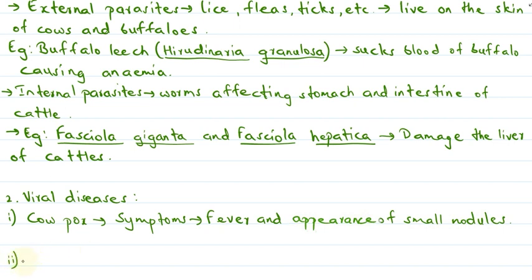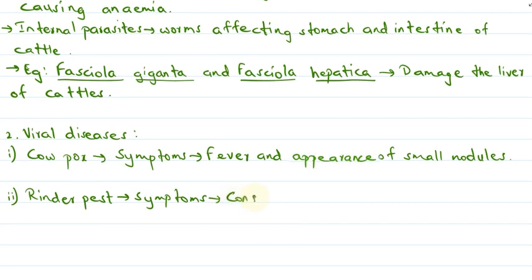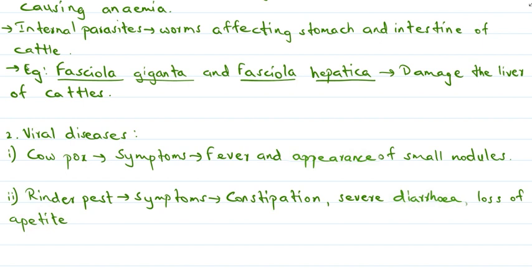The next example is rinder pest. Its symptoms include constipation, severe diarrhea, loss of appetite, and discharge from the nostril and also from the eyes.